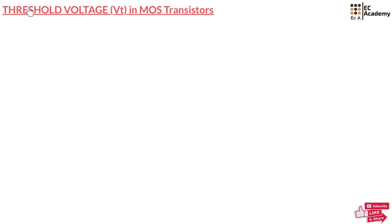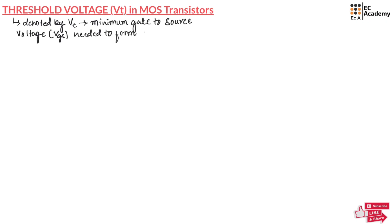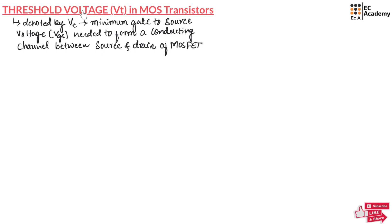What is a threshold voltage? Threshold voltage, denoted by Vt, is the minimum gate-to-source voltage needed to form a conducting channel between source and drain of a MOSFET. In other words, threshold voltage is the minimum voltage required by the MOSFET to turn on.